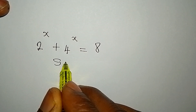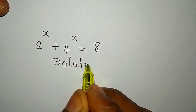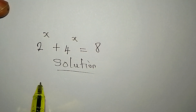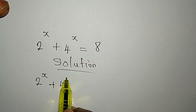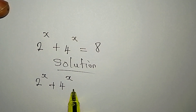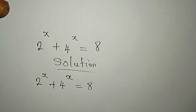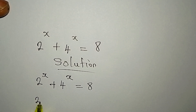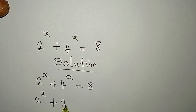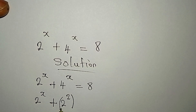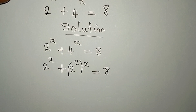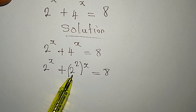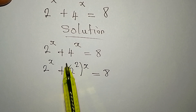Hello everyone, let's provide a solution to this problem: 2 to the power of x plus 4 to the power of x equals 8. Now we cannot add what we have here directly, but we can rewrite 4 to the power of x as 2 to the power of 2 to the power of x, because breaking 4 into 2 squared still gives us 4.